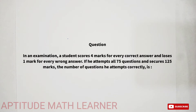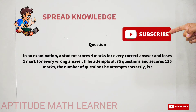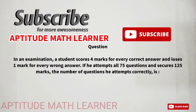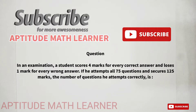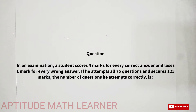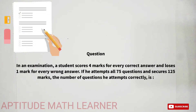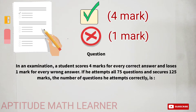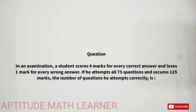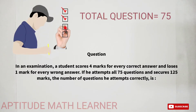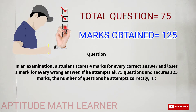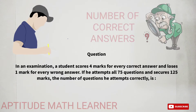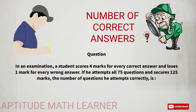Hello and welcome to my YouTube channel Aptitude Math Learner. Today's question is very interesting. For those who are new to my channel, please support and subscribe. The question today is: in an examination, a student scores four marks for every correct answer and loses one mark for every wrong answer. If he attempted all 75 questions and secured 125 marks, find the number of questions he attempted correctly.